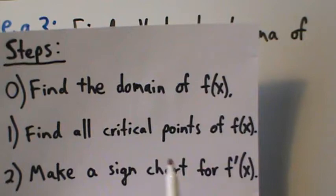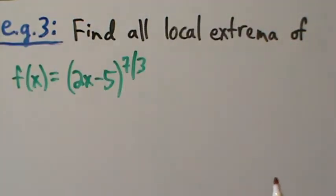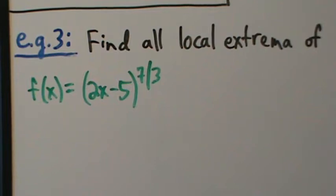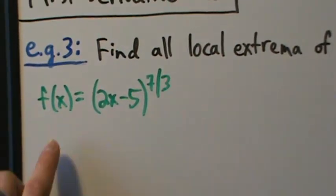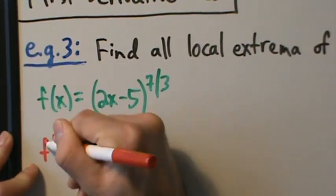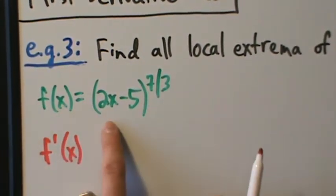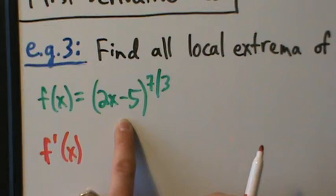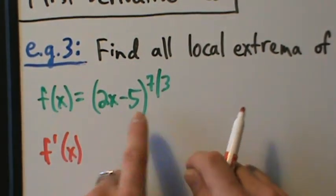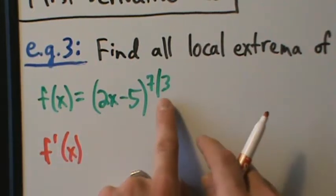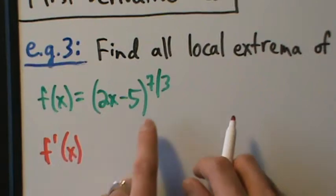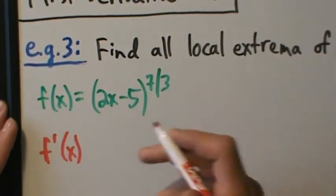Step 1: find all the critical points of f(x). That means take the derivative, set it equal to 0, and find where it's undefined. Here 2x minus 5 is a function of x sitting inside the exponent 7/3 — a function inside a function. So we need the power rule combined with the chain rule.